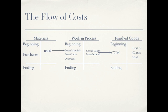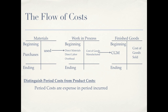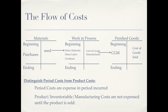That leads us to our next discussion: distinguishing between period cost and product cost. Period costs are expensed in the period they are incurred — period costs are your selling and administrative expenses, or your operating expenses. Product costs are not expensed until the product is sold. So our product costs are our direct materials, our direct labor, and our overhead. As you can see by our diagram here, those costs were not expensed until we sold the product, and then the cost was called cost of goods sold.